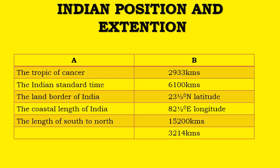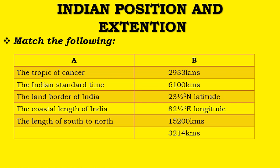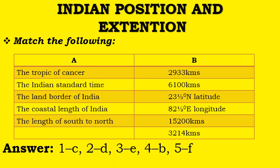Indian Position and Extension lesson continues. You need to match column A with column B. The Tropic of Cancer is 23.5 degree North latitude. The Indian Standard Time is 82.5 degree East longitude. The land border of India is 15,200 km. The coastal length of India is 6,100 km.